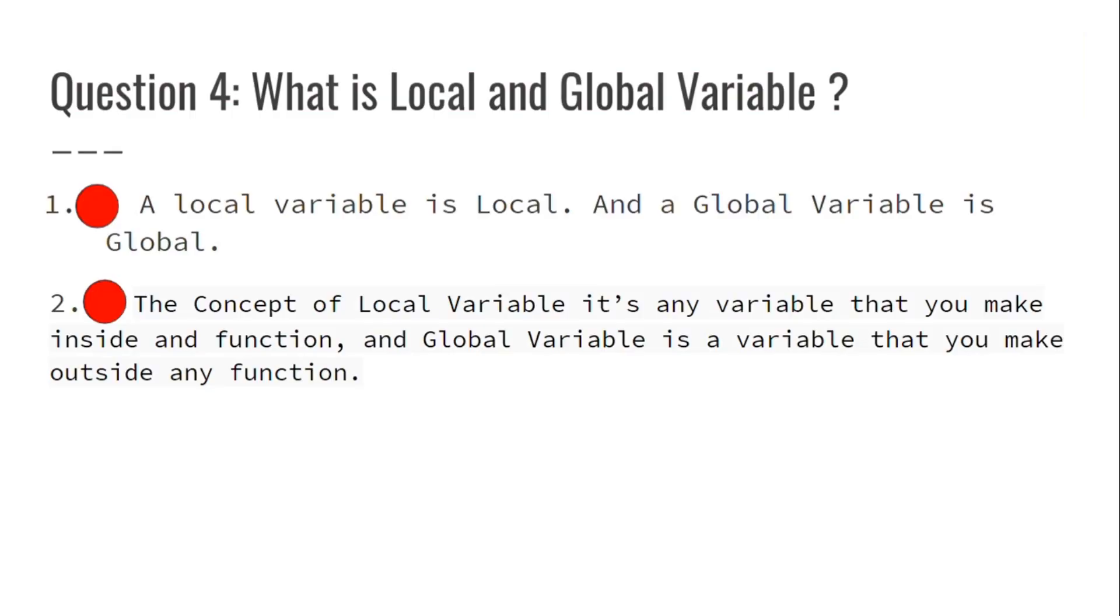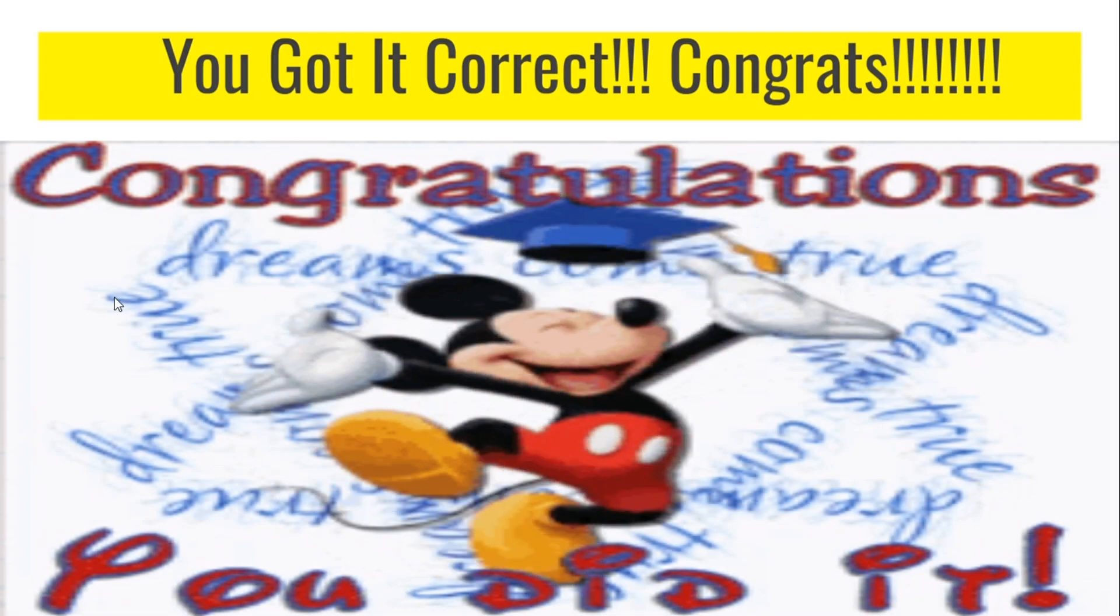My turn to ask you the question. Question number 4: What is local and global variables? Number 1. A local variable is local and a global variable is global. Number 2. The concept of local variable is any variable that you make inside of a function. And global variable is a variable that you make outside any function. Hmm, this is kind of hard. I think it's number 2. Let's check. Yup! I got it right!